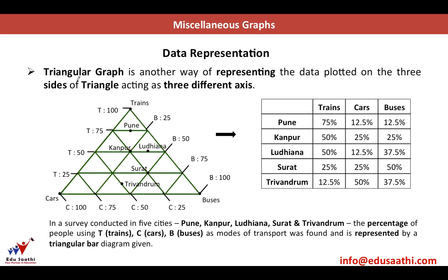Let's look at another type: the triangular graph, which is a way of representing data plotted on the three sides of a triangle acting as three different axes. We have trains, cars, and buses. In a survey conducted in five cities — Pune, Kanpur, Ludhiana, Surat, and Trivandrum — the percentage of people using trains, cars, and buses (represented by T, C, and B) as modes of transport was found and is represented by a triangular bar diagram.